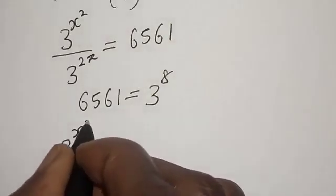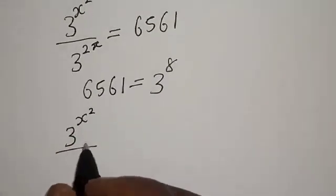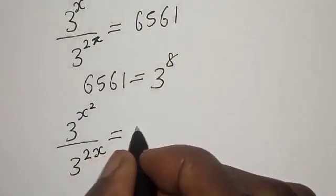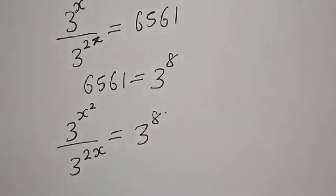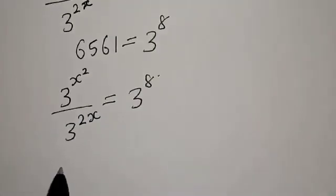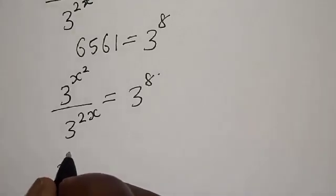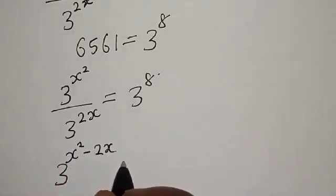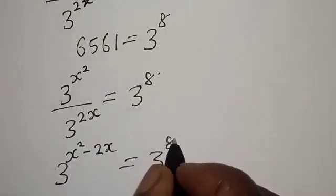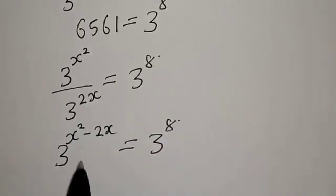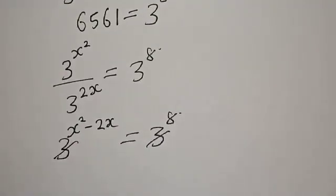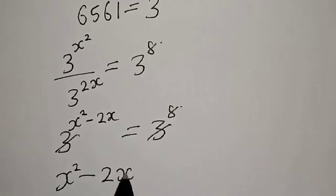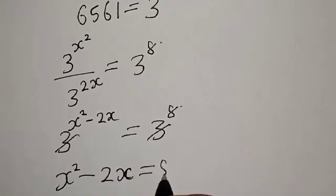We have 3 raised to the power S squared over 3 raised to the power 2S is equal to 3 raised to the power 8. Then our left-hand side becomes 3 raised to the power S squared minus 2S is equal to 3 raised to the power 8. They have the same base, so the bases cancel. We have S squared minus 2S is equal to 8.